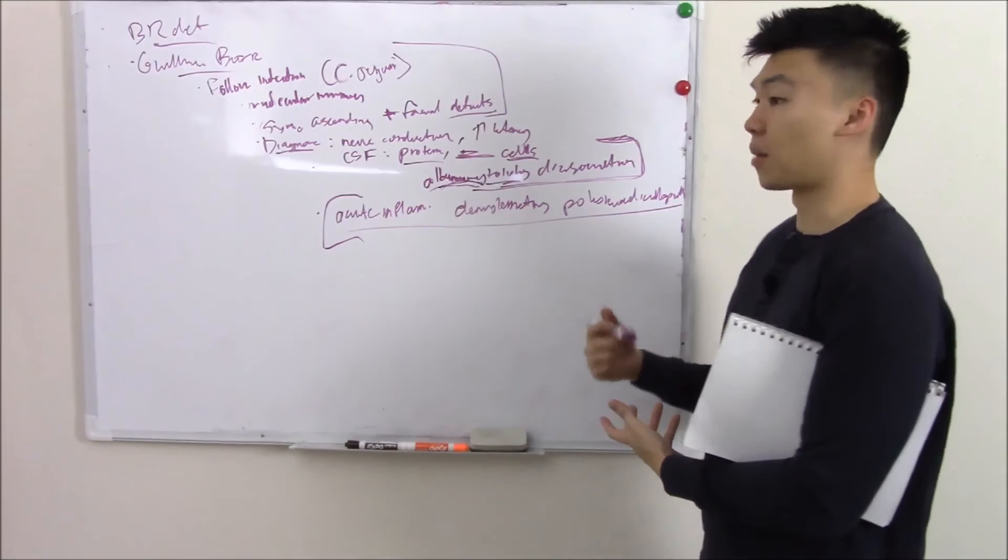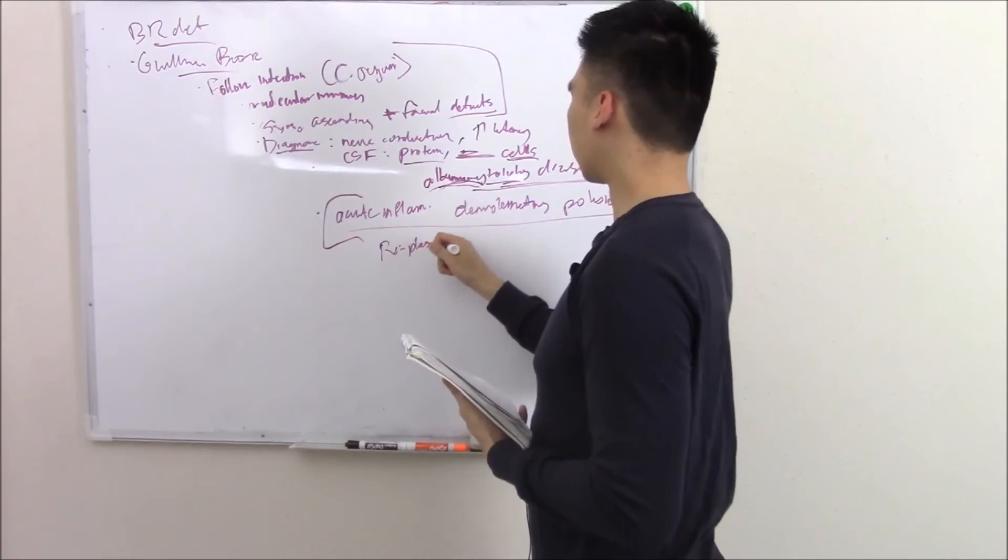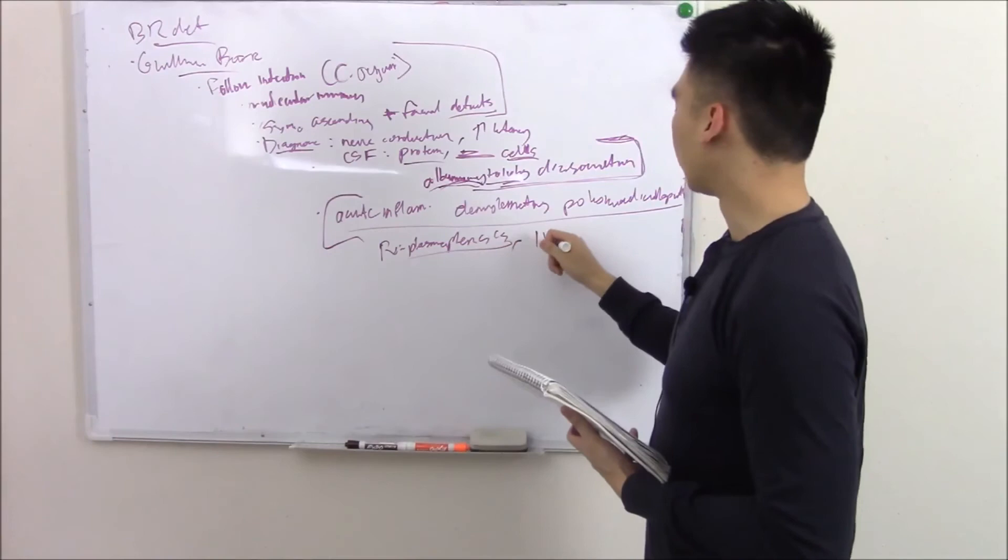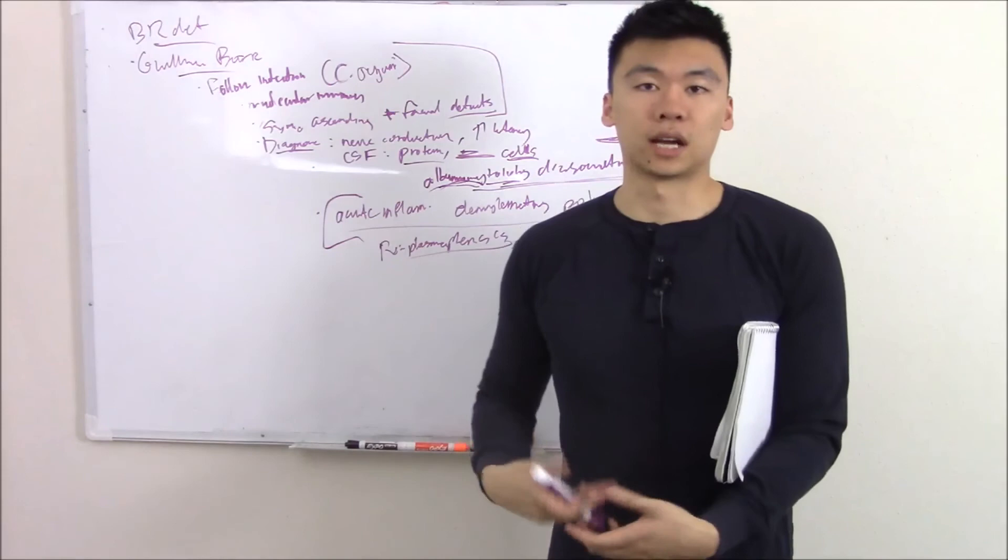How do you treat it? You can do plasmapheresis to remove any antibodies. You can do IVIG to dampen the antibody effect. And you want to do respiratory support because once it ascends to your diaphragm, once that paralysis ascends to your diaphragm, then you can stop breathing. So respiratory support is a big one.